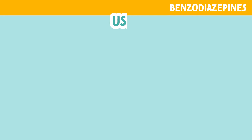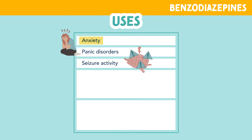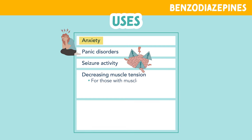Let's look at why and when benzodiazepines are used. Benzodiazepines are most commonly used for anxiety and panic disorders. With the overall ability to ease the body's muscles, they may also be used for seizure activity. They also help decrease muscle tension, which is why they may be referred to as muscle relaxants.